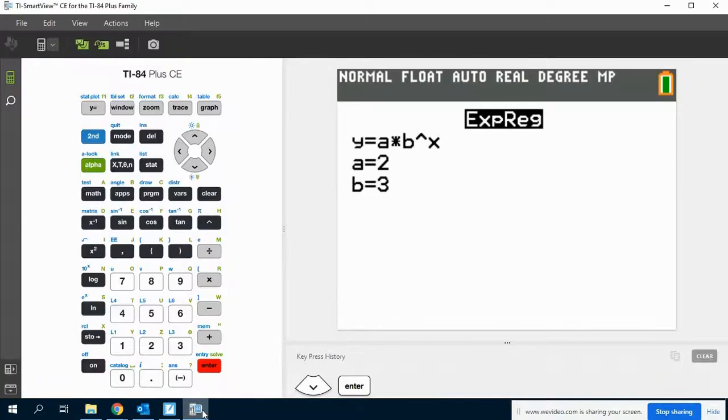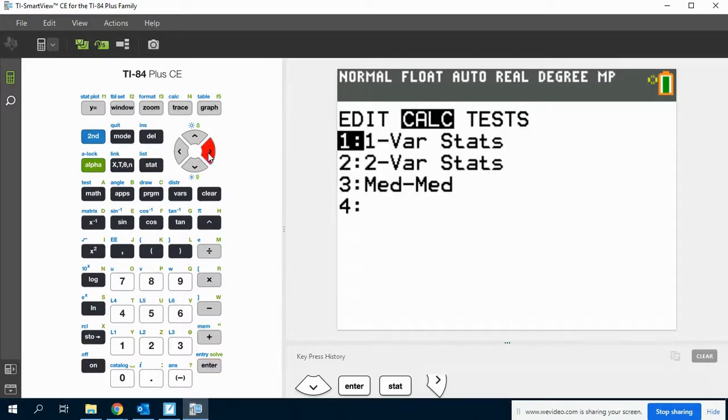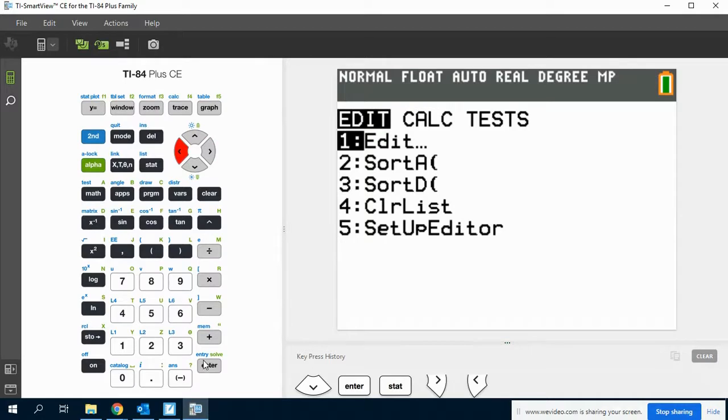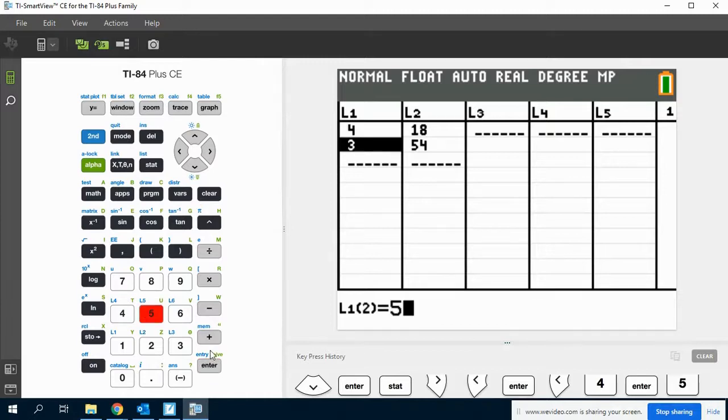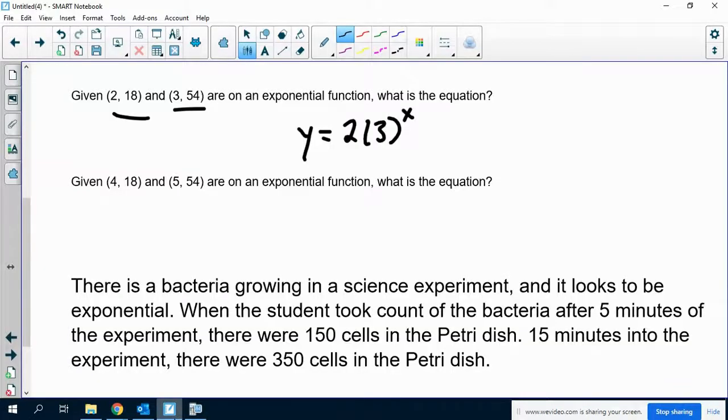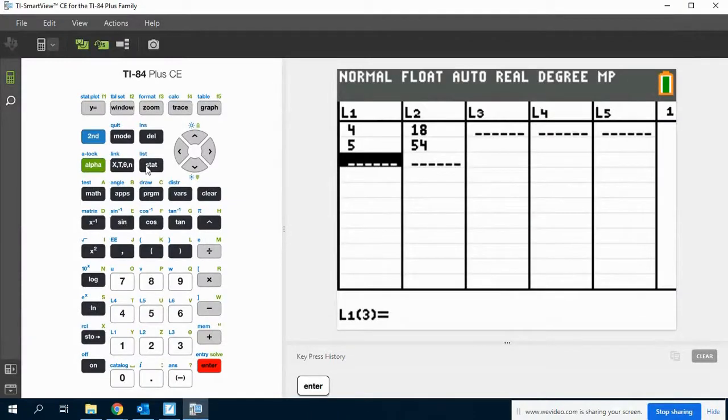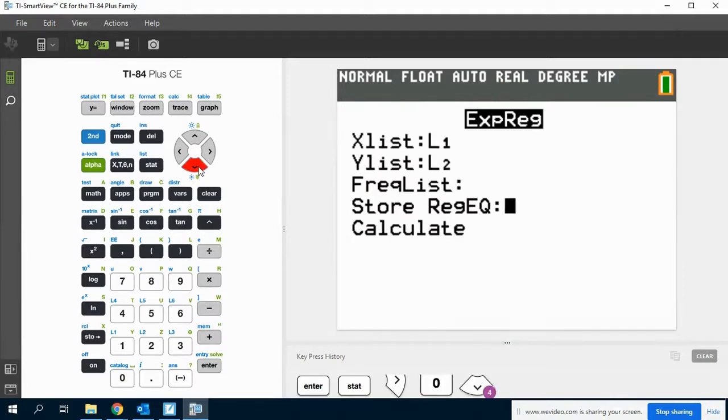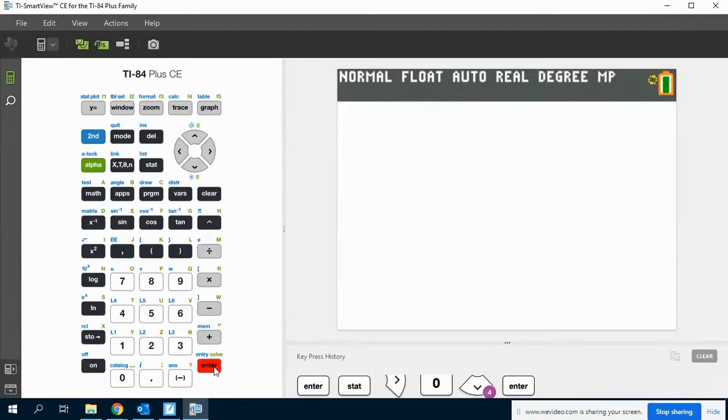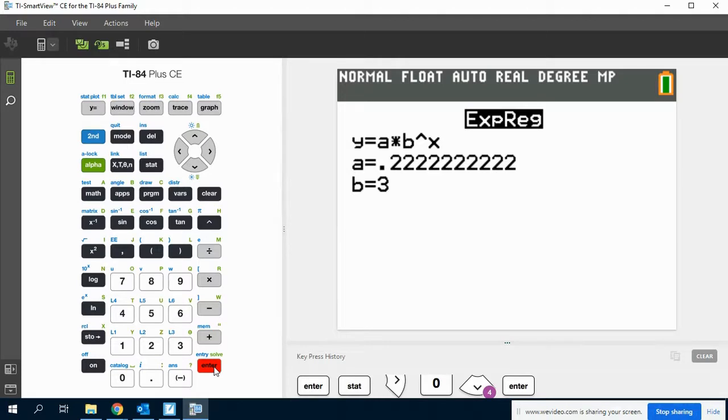Now, what if I made a horizontal shift? So notice that what I did for this is I just did a horizontal shift to the right 2. So it's now 4,18 and 5,54. Well, if I go to exponential regression, remember it's option zero. And I calculate, I'm going to end up with a different a value, but the b value is the same.